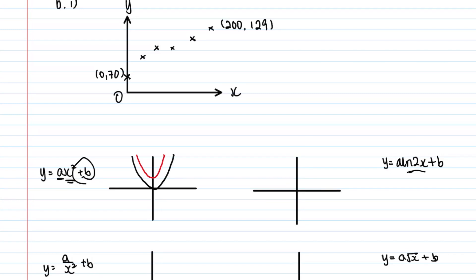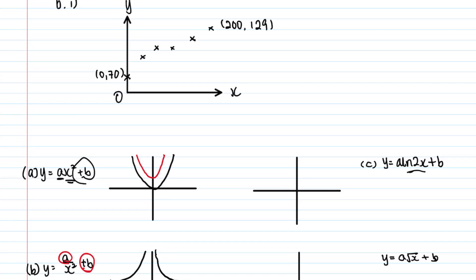Case B: y equals a over x squared plus b. The base graph 1 over x squared has asymptotes at y equals 0 and x equals 0. When you scale by a and translate by b, the graph shifts up and the asymptote changes, but this shape still does not resemble our scatter diagram.